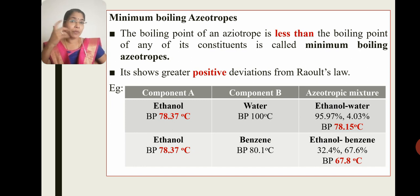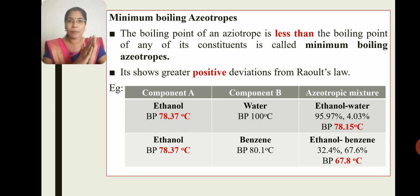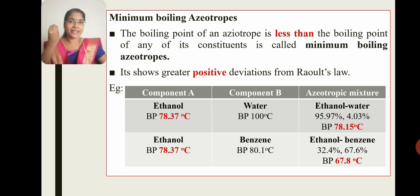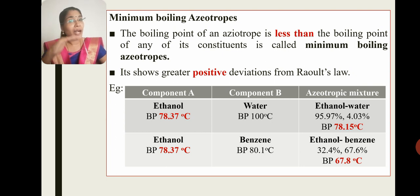For example, consider an azeotropic mixture of ethanol and water. That composition is 95.97% ethanol and 4.03% water. The ethanol boiling point is 78.37 degrees Celsius and the water boiling point is 100 degrees Celsius. The ethanol-water azeotropic mixture boils at 78.15 degrees Celsius.